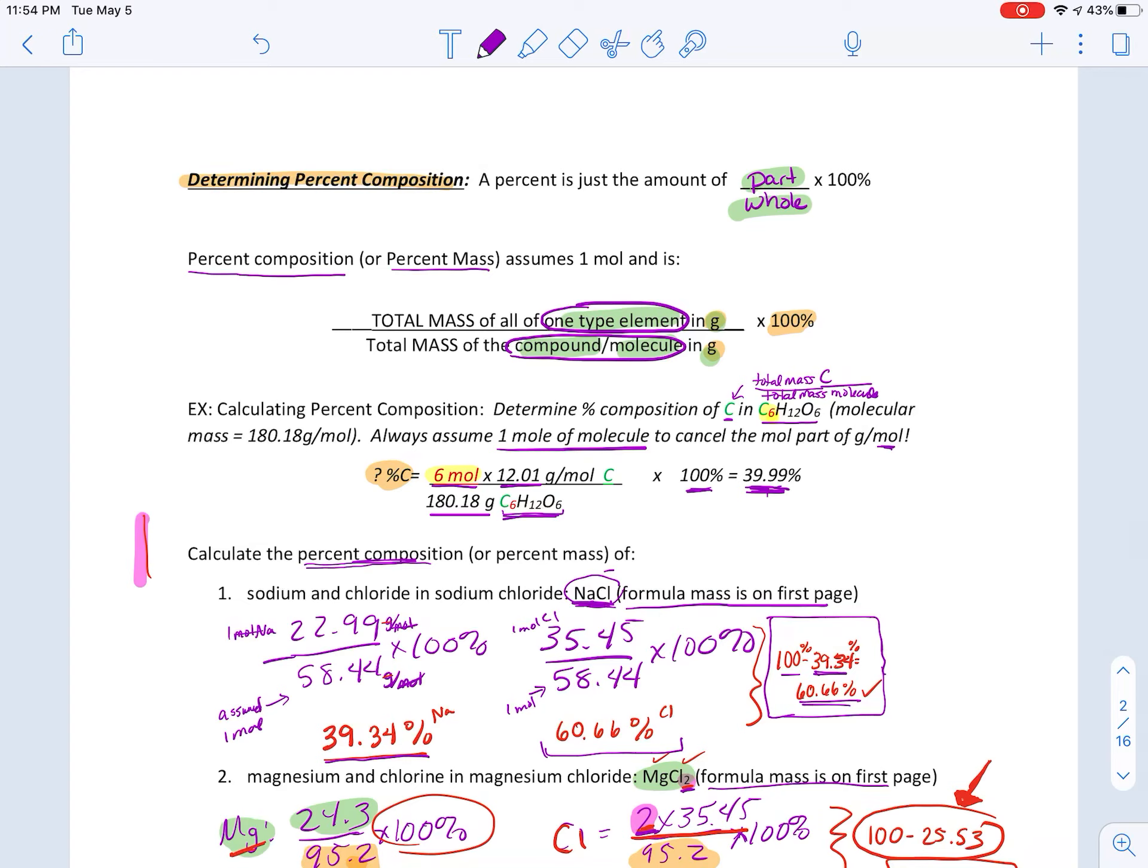And with these ones, it's percent mass. And also, instead of percent composition, it can also be called percent mass. In Gen Chem 2, you will definitely be seeing percent mass. So it's the total mass of all of one type of element in grams over the total mass of the compound.